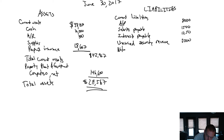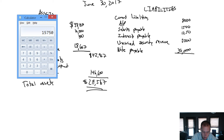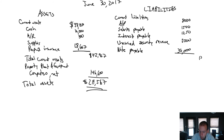Notes payable are not always current, but that one is — 30,000. So 8,000 plus 1,500 plus 1,250 plus 5,000 plus 30,000 equals 45,750. Because of that reclassification, we don't have any long-term liabilities, so 45,750 is our total liabilities. On to shareholders' equity.